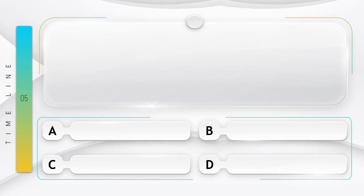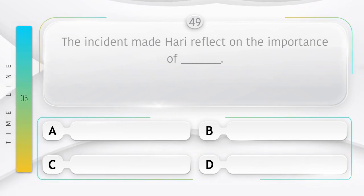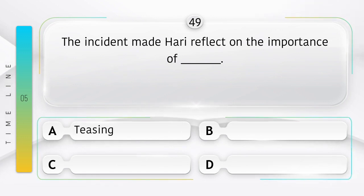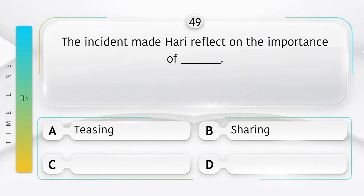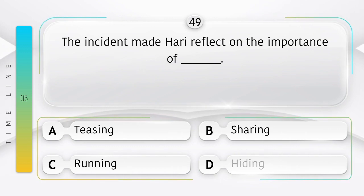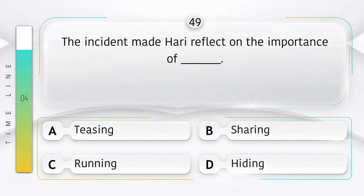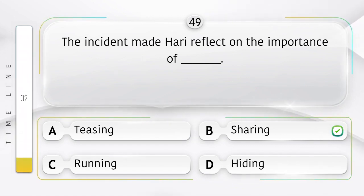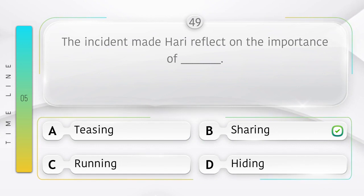Actions. The incident made Hari reflect on the importance of ______. Option is A. Teasing. B. Sharing. C. Running. D. Hiding. Answer is option B.